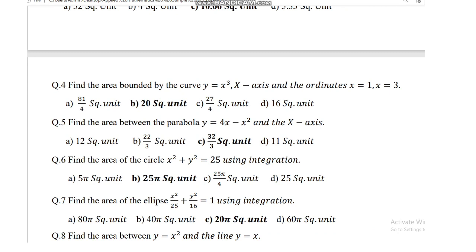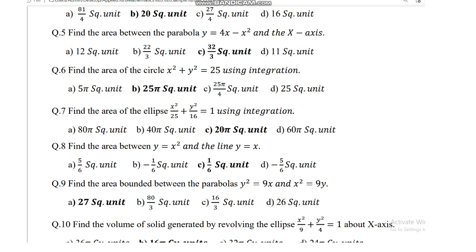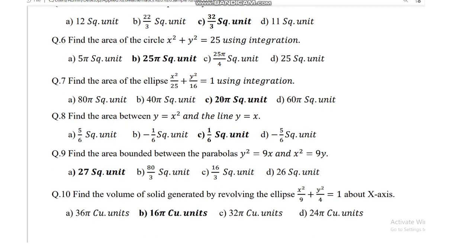Question number 4: find the area bounded by the curve y = x cubed and the x-axis. Question number 5: find the area between y = 4x and x squared, and the area is 32 by 3 square units. Question number 6: find the area of circle x squared plus y squared = 25 using integration. The area is 25 pi square units. Question number 7: find the area of ellipse x squared by 25 plus y squared by 16 = 1 using integration. It is 20 pi square units.